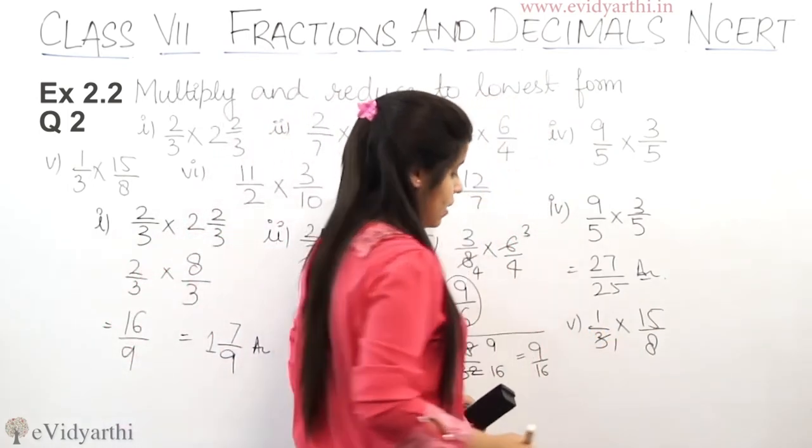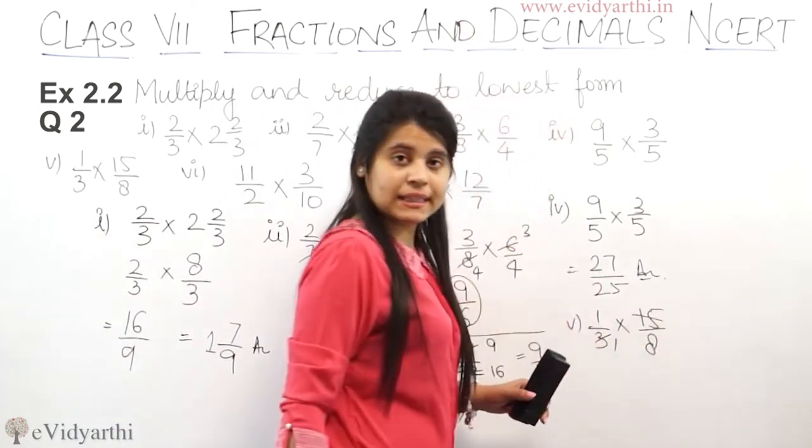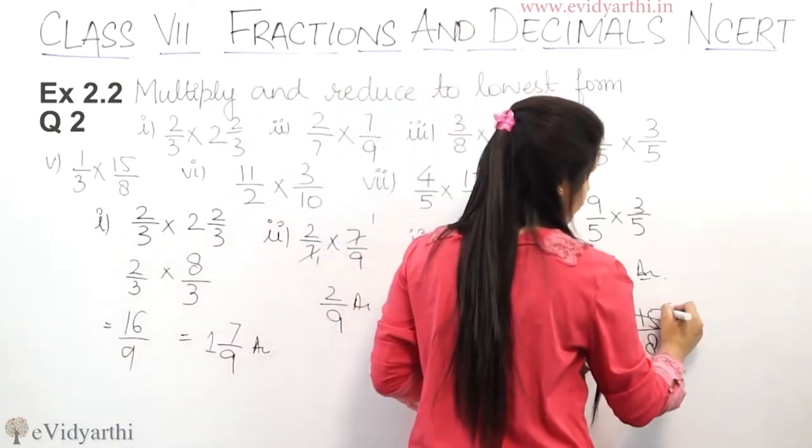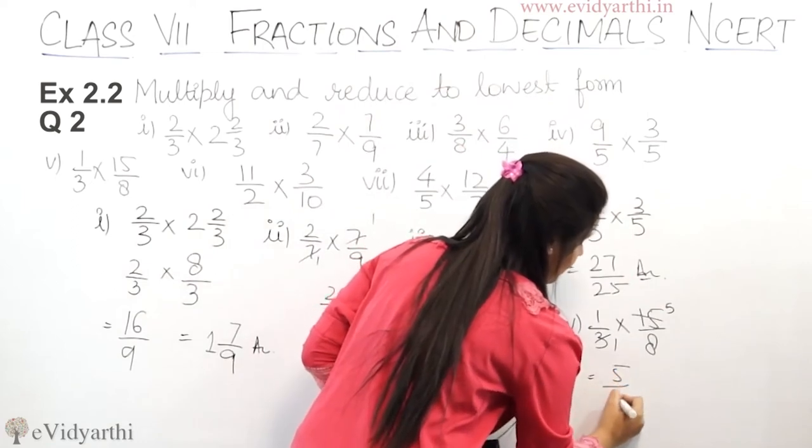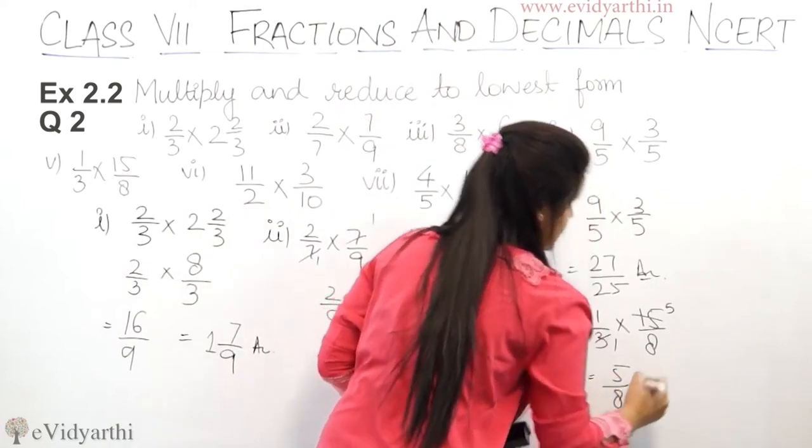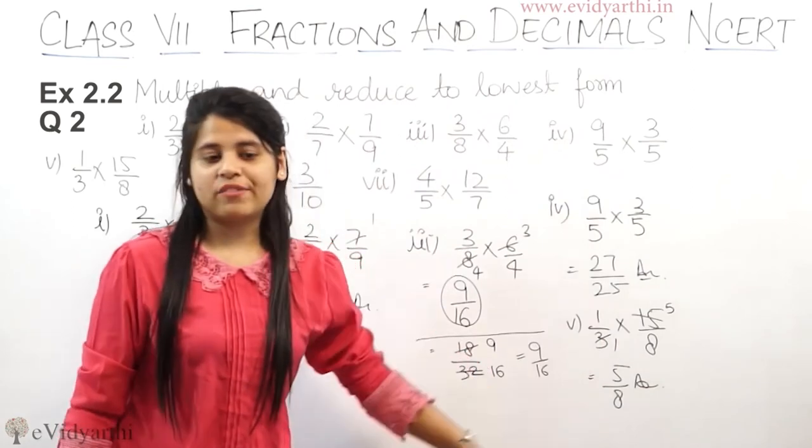So you have 1, 3 ones are 3 and 15 is 3 fives are 15. So this is 5 upon 8. So answer is 5 upon 8.